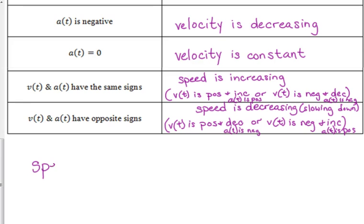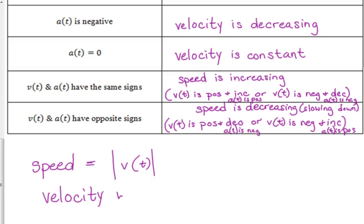If they ask you about speed, speed is the absolute value of your velocity. Speed is velocity without direction — they are the same numerical value, but speed does not have the sign that velocity has. So if your velocity is positive, your speed matches it exactly. But when your velocity is negative, speed gets flipped to be positive.